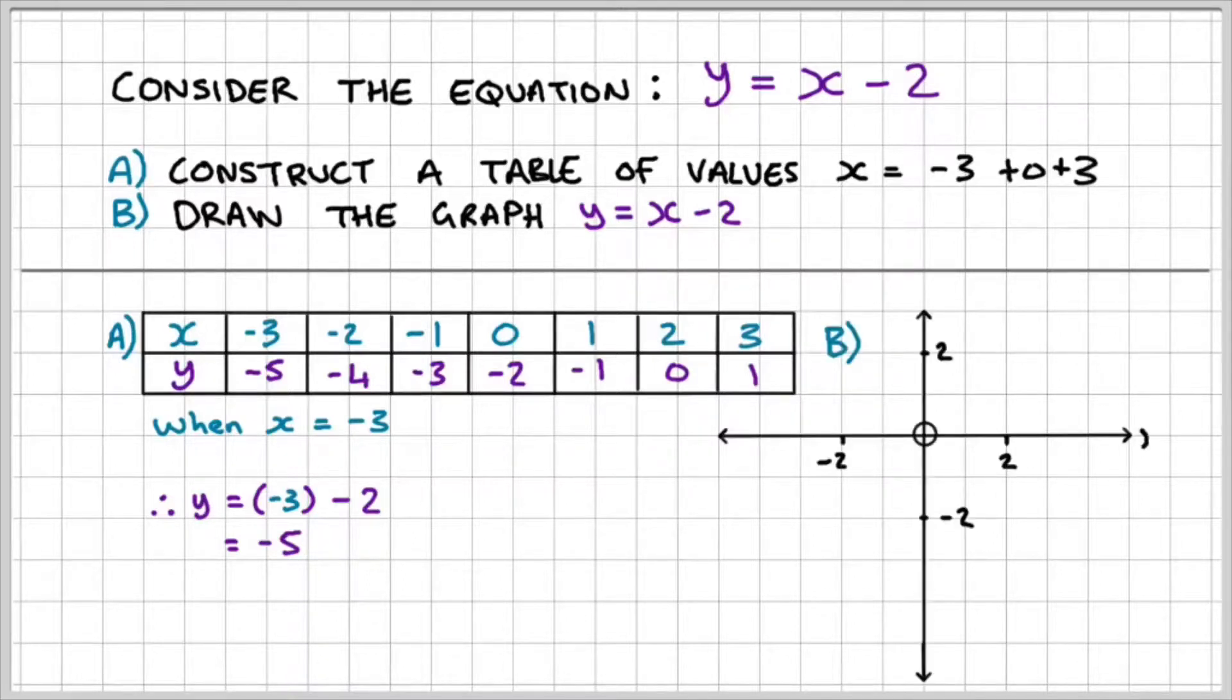Part B, I want to draw the graph of y equals x minus 2. So I know that the x values are from negative 3 to positive 3, so my x-axis has to be wide enough. And I know that the y-axis is from negative 5 to 1, so that has to be long enough as well. Now, all I need to do is plot the coordinate pairs on my graph, and then draw a straight line through all my points.